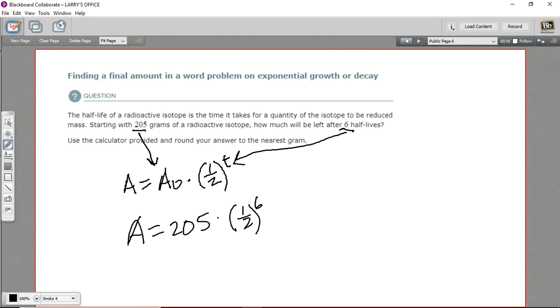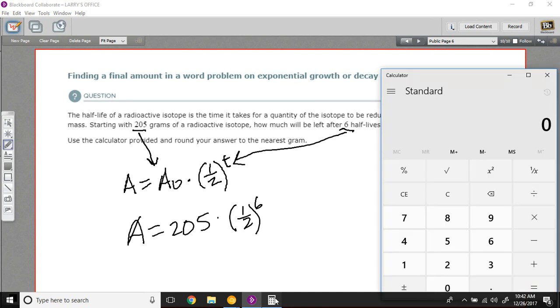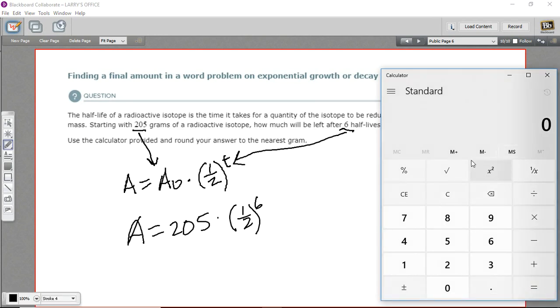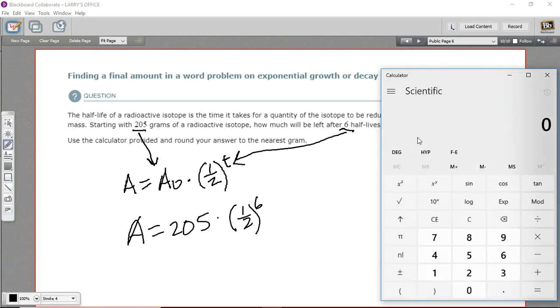Once we've got all this figured out, we can just bring up our calculator. I'm in standard, I'm going to go to scientific because I want this x to the y key. And I'm going to do the one-half to the sixth power first. So I'll punch in .5 for one-half and hit x to the y, six.